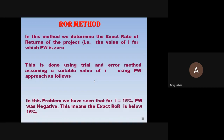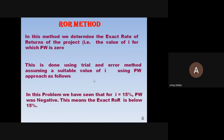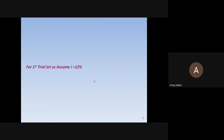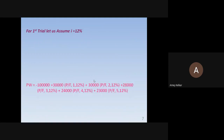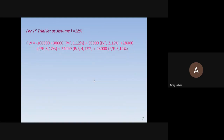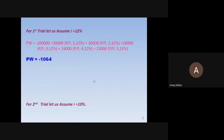We already know that at i=15%, the present worth was negative, meaning the exact rate of return is below 15%. For the first trial, we assume i=12%. Referring the 12% table and computing present worth for years 1 through 5 gives a present worth of minus 1,064. Since the value is still negative, i=12% also gives a non-feasible result, so we proceed to a second trial.